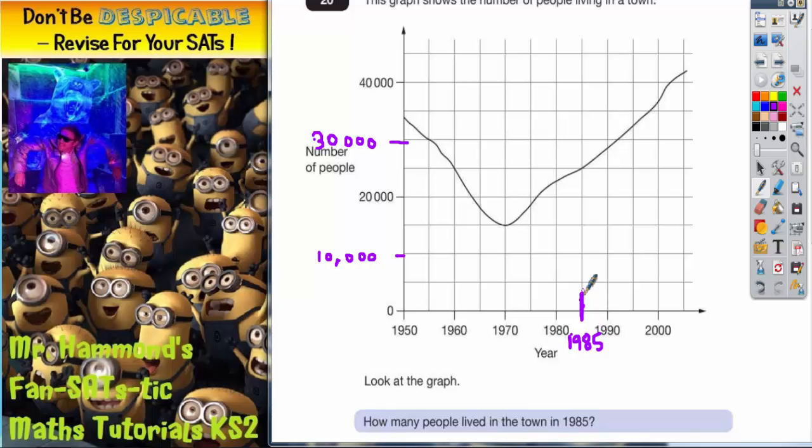So we need to go up from that line there to where we meet the graph. Now draw across to here. And we need to figure out where this arrow is pointing to.